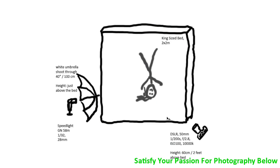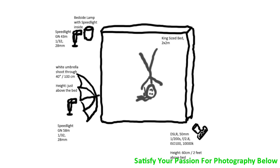But wait, there's more — we've got another trick, and it's a good one. We add a second speedlight for much more punch. This second speedlight — guide number 43, also dialed down to 1/32nd power — goes through a lamp shade. It's actually the lamp shade of a bedside lamp, and the speedlight is placed inside the lamp.